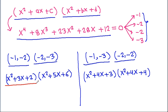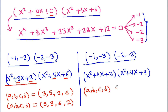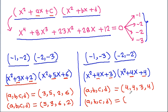If the first factor is x² + 3x + 2 paired with x² + 5x + 6, then a = 3, c = 2, b = 5, d = 6. Or equivalently a = 5, c = 6, b = 3, d = 2. And for the pairing x² + 4x + 3 with x² + 4x + 4, we get a = 4, c = 3, b = 4, d = 4. Or a = 4, c = 4, b = 4, d = 3.